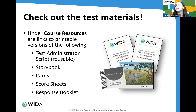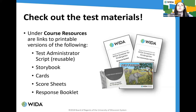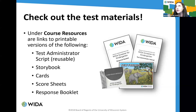Once you have access, you can check out test materials under Course Resources — that's where you'll find links to the printable versions of the TA script (which is reusable), the student storybook, the cards used as manipulatives during screening, score sheets, and the response booklet. Kits and kit components are also available for purchase via the WIDA Store. All materials should be printed double-sided; color printing is recommended, but black and white or grayscale works as well.